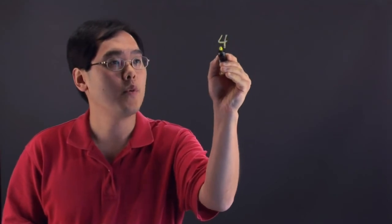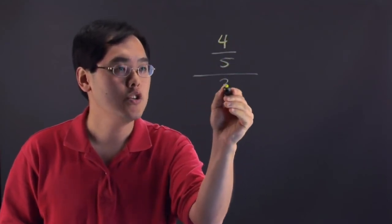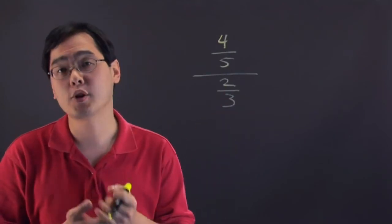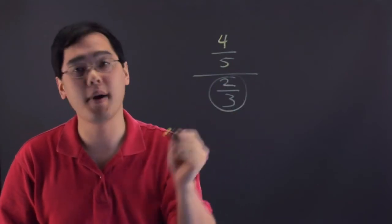So let's do an example and now you'll see where this goes. Suppose you have 4 fifths divided by 2 thirds. Now, when you're dividing a fraction, it's actually a multiplication exercise because it involves taking the denominator and thinking about its reciprocal.